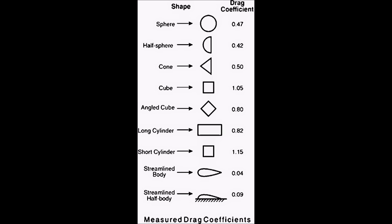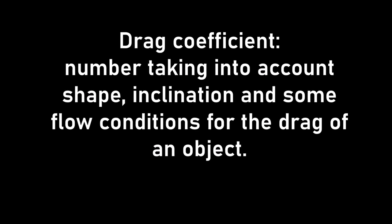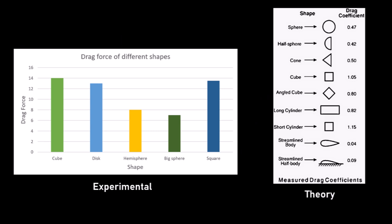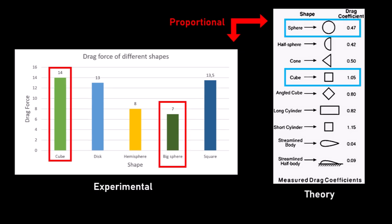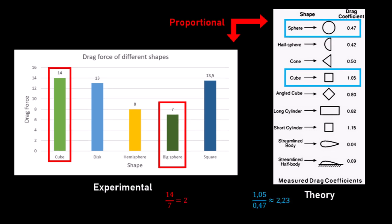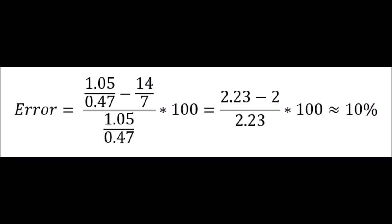This is a photo of drag coefficients of generic shapes. The drag coefficient is a number used to model all of the complex dependencies of drag on shape, inclination, and some flow conditions. The force of the wind on an object is proportional to the drag coefficient of that object. We can therefore compare our results to this table. On the example of the sphere and cube, we have a percent error of about 10%.